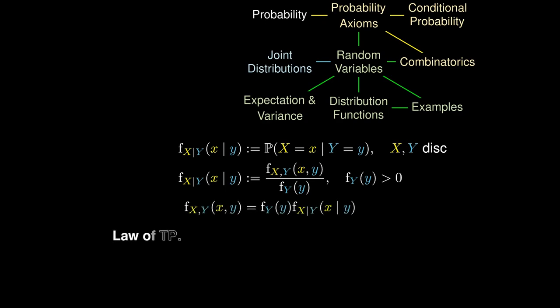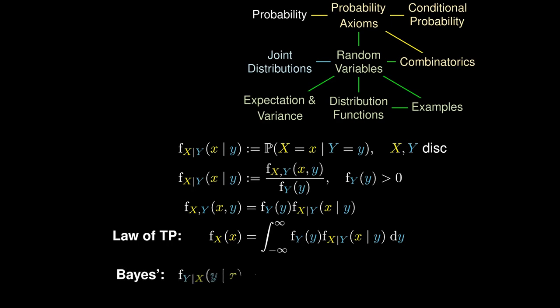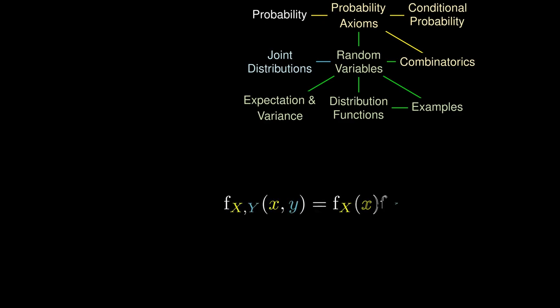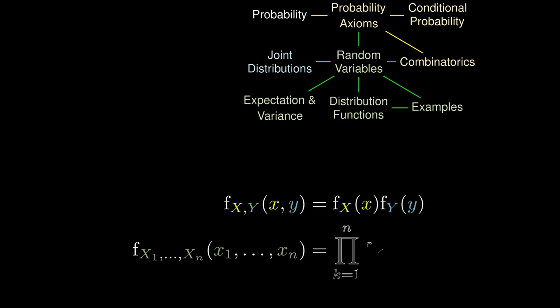Analogously, we have a law of total probability — this time by integrating — and we have an analog of Bayes' theorem in terms of conditional PDFs. Once again, we can swap conditional distributions. And just like before, if the joint PDF factorizes, we say that the random variables are jointly independent.